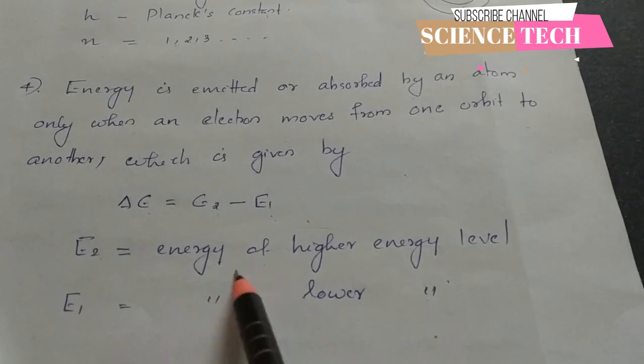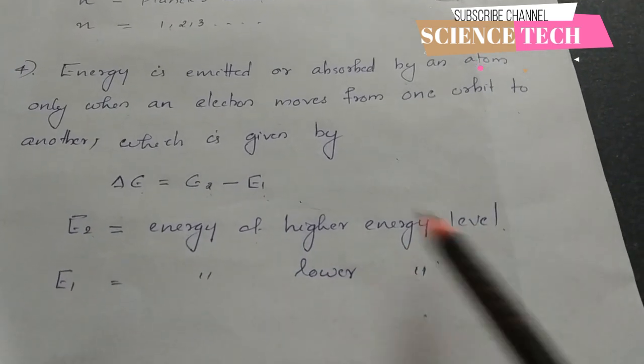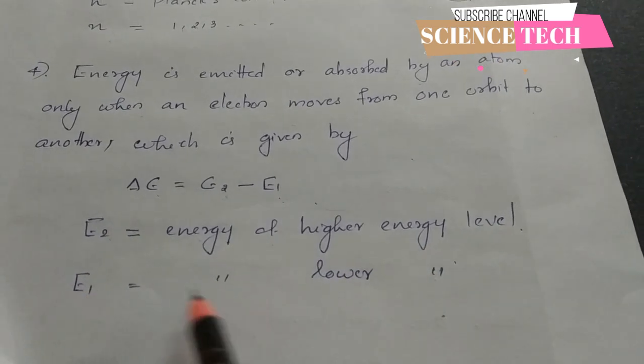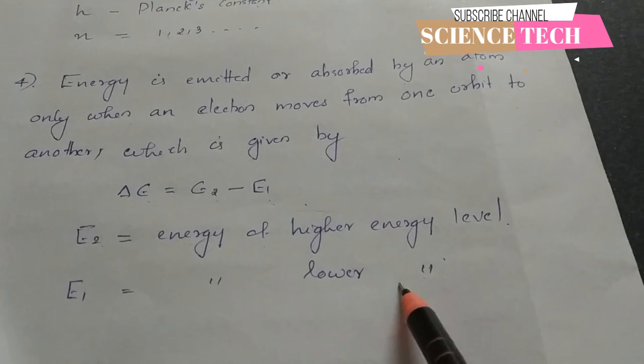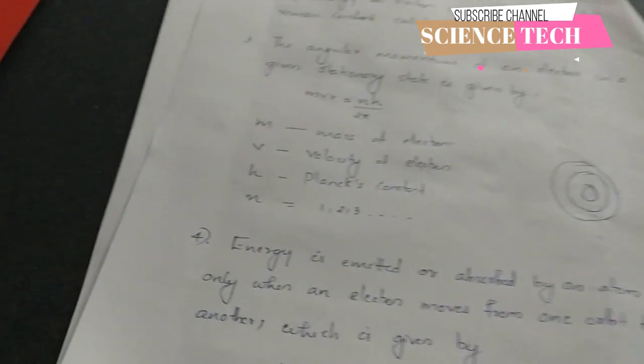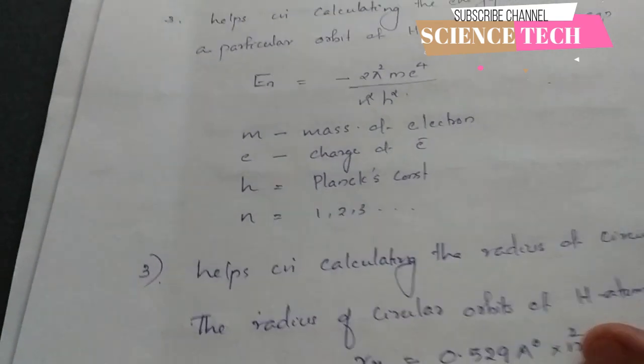The energy change is given by delta E equals E2 minus E1, where E2 is the energy of the higher energy level and E1 is the energy of the lower energy level.